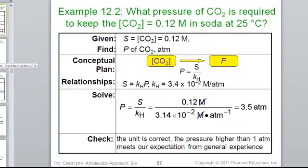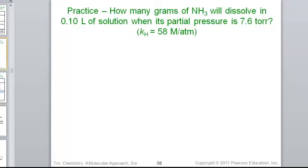It's giving us the proportionality constant for ammonia as 58 molar units divided by atmospheres. Solubility is equal to the proportionality constant, K, times the pressure in atmosphere units.